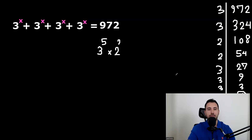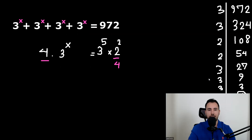Prime factorization for this side: here we had four — four of three to the power of x. So let's divide both sides by four. This side divided by four and this one by four — this would be simplified. So we'll have three to the power of x equals three to the power of five. Well, x equals five.